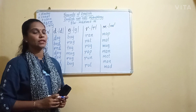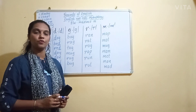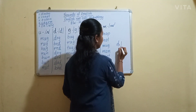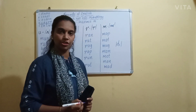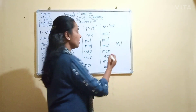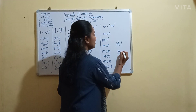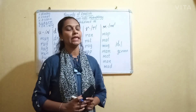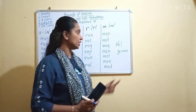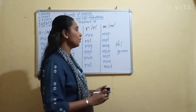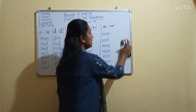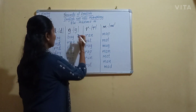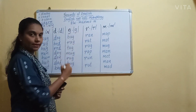In our last video we also learnt that there is one more sound for letter G, that is J. For example, germs. But in ENK level 1, we are not going to teach this particular sound J. We are going to teach the sound G says G.